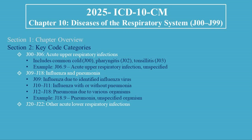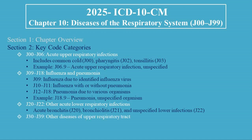J20 to J22 covers Other Acute Lower Respiratory Infections, including Acute Bronchitis (J20), Bronchiolitis (J21), and Unspecified Lower Respiratory Infections (J22). J30 to J39 covers Other Diseases of the Upper Respiratory Tract, including Allergic Rhinitis (J30), Chronic Sinusitis (J32), and Chronic Tonsillitis (J35).